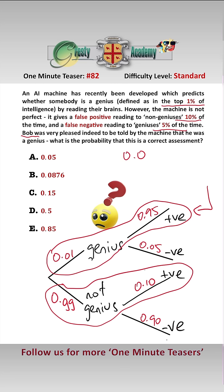is 0.01 times 0.95, over the two possibilities, which is 0.01 times 0.95, plus 0.99 times 0.1, which equals 0.0876,